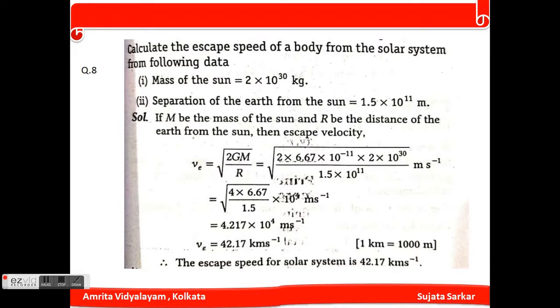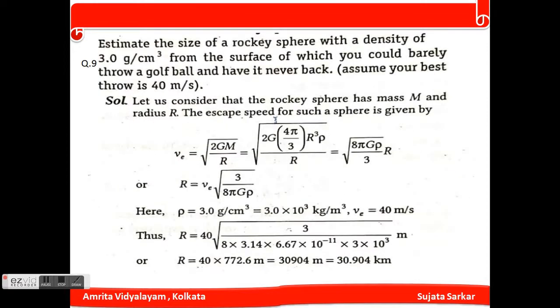The escape speed for solar system is 42.17 kilometers per second. We have to convert this because the answer is in kilometers per second, but the actual answer is 4.217 × 10⁴ meters per second. We have to convert this from meters to kilometers.